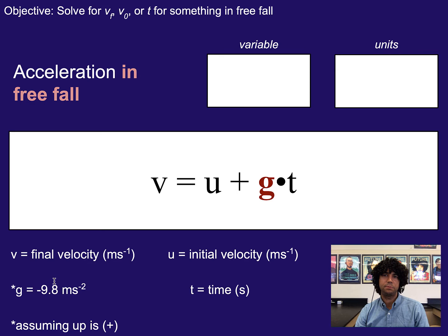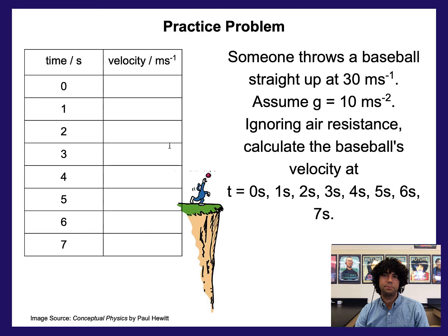So let's do a little practice problem where we're going to figure out the velocity of something over a period of time. We have somebody who throws a baseball straight up into the air with an initial velocity of 30 meters per second. We're going to assume gravity is 10 to make life easier. And we're going to ignore air resistance. That tells us it's in free fall. If we said you couldn't ignore air resistance, then it wouldn't be in free fall and we couldn't do this equation. We're going to calculate the velocity of the baseball at 0, 1, 2, 3, 4, 5, 6, and 7 seconds.